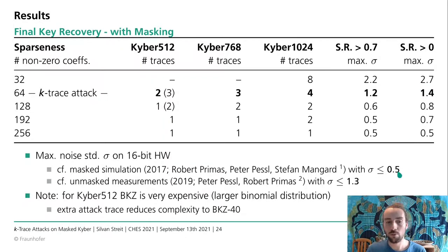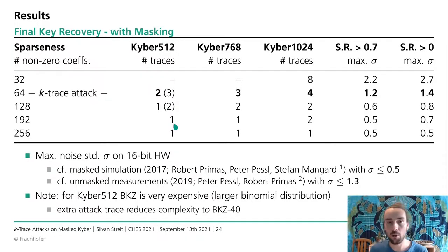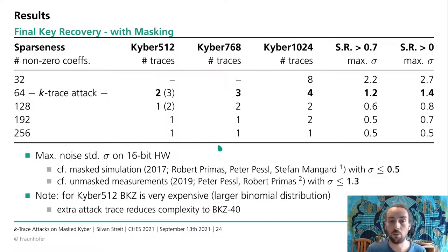Comparing to previous work: in the unmasked case, Pessl's 2019 work was able to perform a real attack with a sigma of 1.3, so our K-trace attack is viable in a real setting. Further, compared to masked simulations before, our sigma definitely exceeds the previous work, which was only up to sigma 0.5. Note that for Kyber-512, BKZ solving is rather tedious due to the larger binomial distribution and takes a few days; if you want all cases solved, you can simply increase the number of traces by one and solve it with BKZ-40.